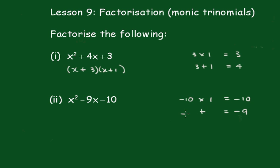That's really important, you don't get the signs back to front, don't write 10 and negative 1. And that's why you have this, because minus 10 times 1 is minus 10, and minus 10 plus 1 is minus 9. So it just becomes (x - 10)(x + 1).